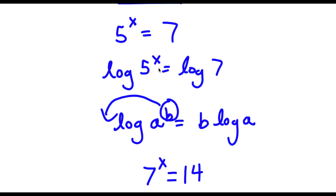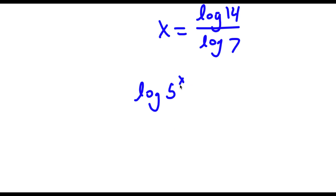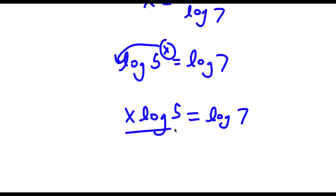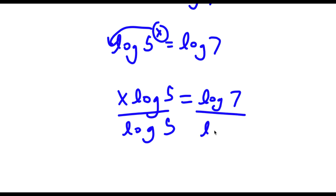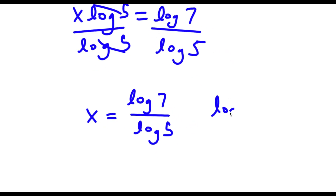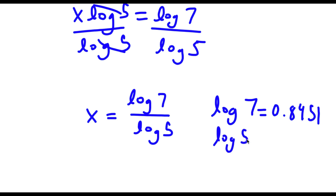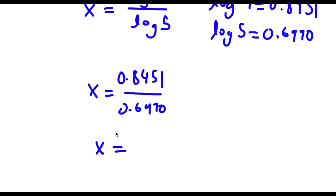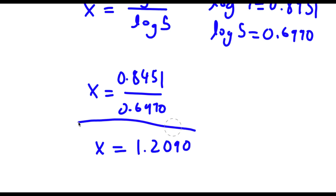So for 5 to the power of x equals 7, I have x equals log 7 over log 5. Log 7 is equal to 0.8451 and log 5 is equal to 0.6990. So I have 0.8451 over 0.6990, which is approximately equal to 1.2090. So this is my answer.